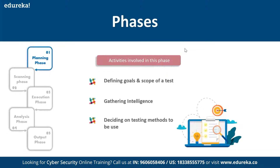In the planning phase, you perform information gathering — you try to get information about your target, and based on that you plan the attack. You use different types of testing methods based on your goals, and you gather as much information about your target as possible.